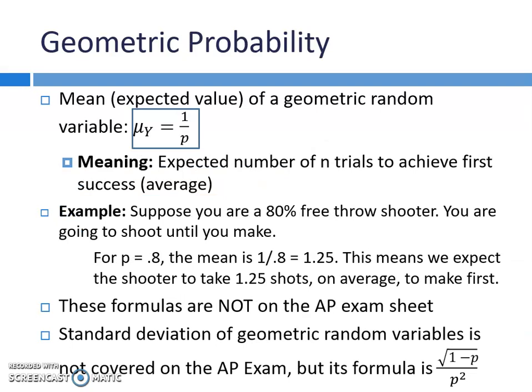The formula for mean is also not on the formula sheet. The mean, or expected value, of a geometric random variable is just 1 divided by your probability of success. Quick example: suppose you are an 80% free throw shooter and you shoot until you make it. The probability of success is 0.8, so the mean is 1 divided by 0.8, which equals 1.25. This means we expect the shooter to take 1.25 shots on average to make his first free throw. Standard deviation for geometric random variables is not an AP topic, but the formula is the square root of (1 minus P) over P squared.